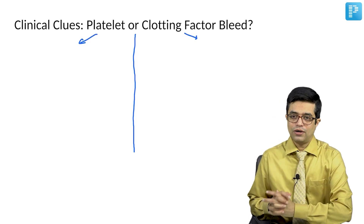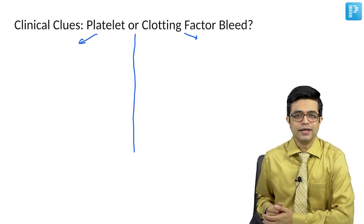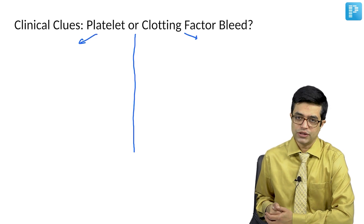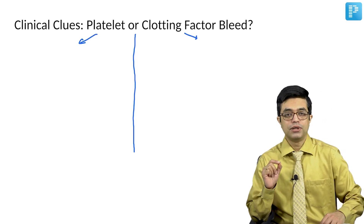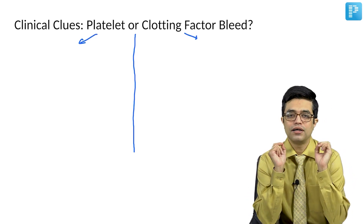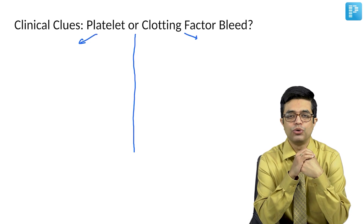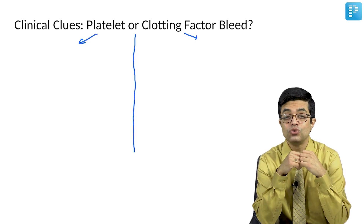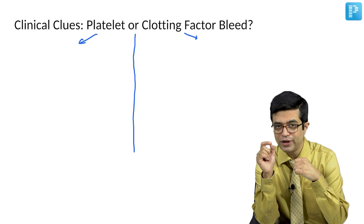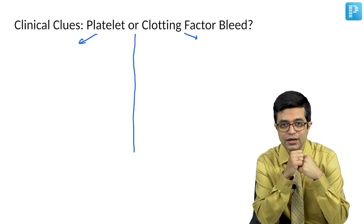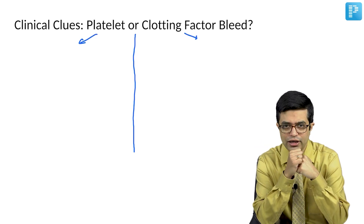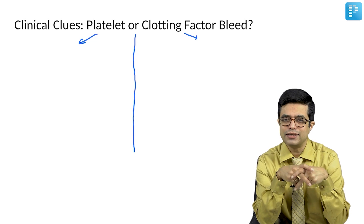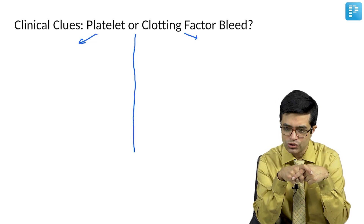A commonly asked and commonly considered question: what is petechiae? What is purpura? What is ecchymosis? Remember that all three are types of cutaneous bleeds. The difference is mainly related to size. Small pinpoint bleeds are petechiae, slightly larger are purpura, and large geographical areas formed due to coalescence are ecchymosis.